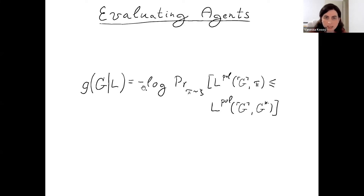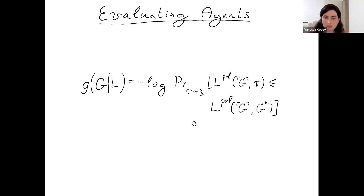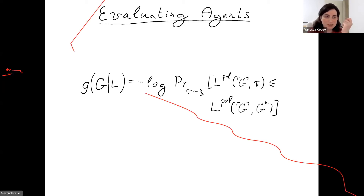The equation is: G(G, L) equals minus the logarithm of the probability, where phi is taken from a prior over policies representing some kind of simplicity prior, and we're looking at the probability that the loss this agent gets with policy phi is smaller than the loss it gets with its true policy G-star. In other words, an agent is intelligent when the fraction of policies that do better than it is small — the more optimized the agent is for its loss function, the more intelligent it is.